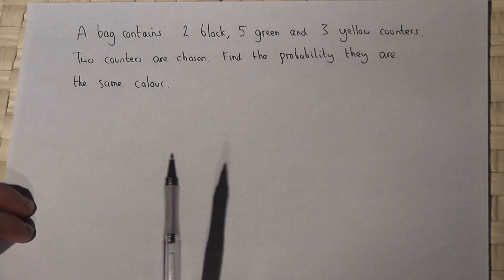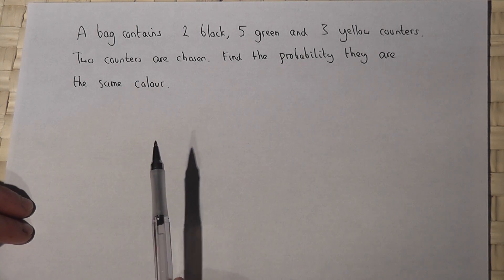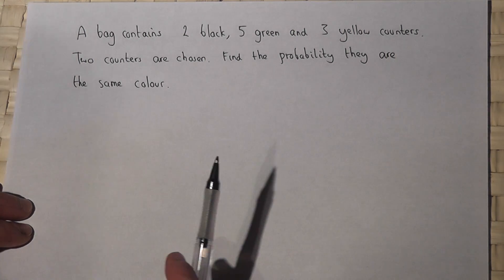In this video we have a bag which contains two black, five green and three yellow counters. Two counters are chosen at random and the question says what's the chance they have the same colour?